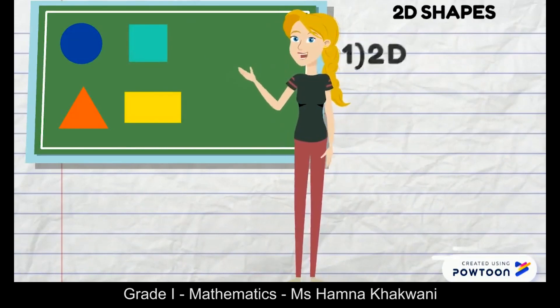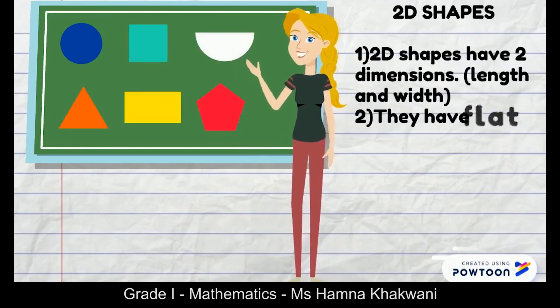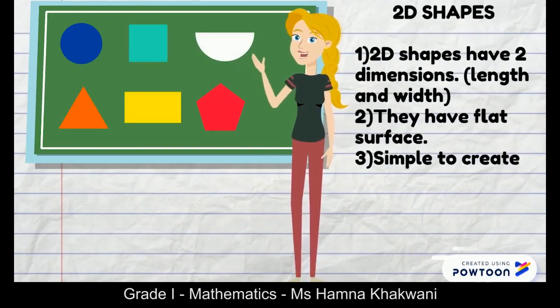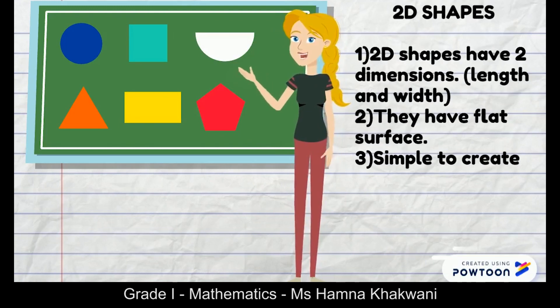So Tessa, 2D shapes have two dimensions: length and width. They have flat surface and they are very simple to create.